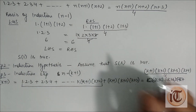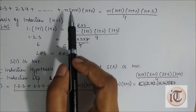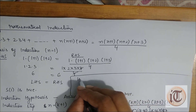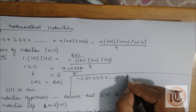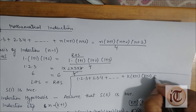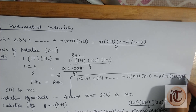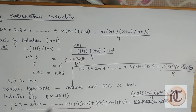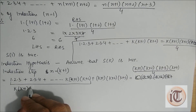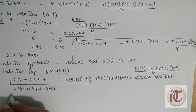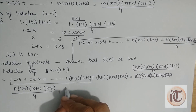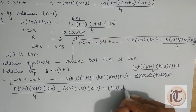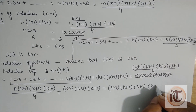From Step 2, since S(K) is true, we substitute: 1·2·3 + 2·3·4 + ... + K(K+1)(K+2) = K(K+1)(K+2)(K+3)/4. Substituting this into the left hand side, we get K(K+1)(K+2)(K+3)/4 + (K+1)(K+2)(K+3), and the right hand side is (K+1)(K+2)(K+3)(K+4)/4.